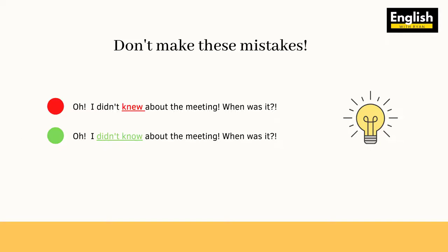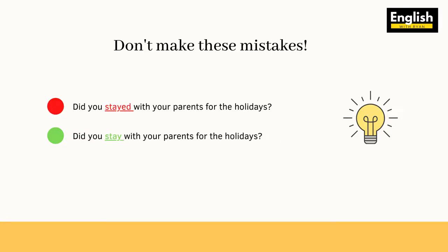Now let's go and see how this actually applies to questions in English. Let's take a look at the first one: 'Did you stayed with your parents for the holidays?' You can see 'did' at the beginning of the sentence; therefore, your verb remains simple. So the correct form will be: 'Did you stay with your parents for the holidays?'